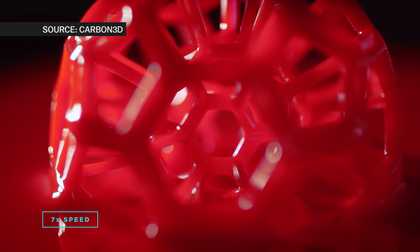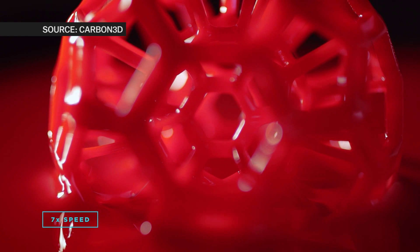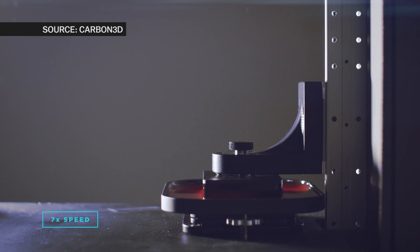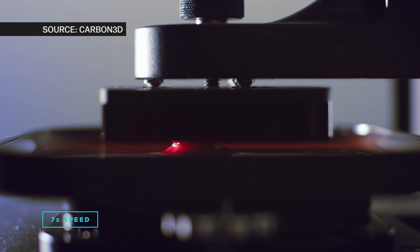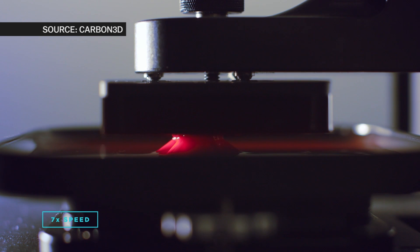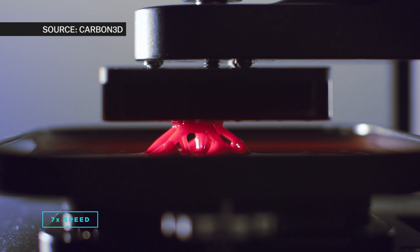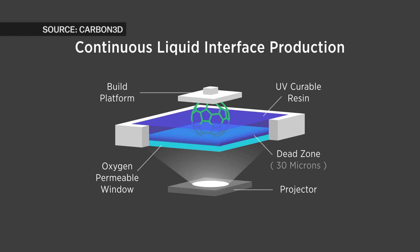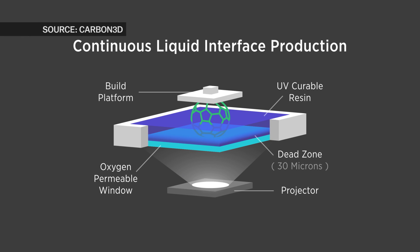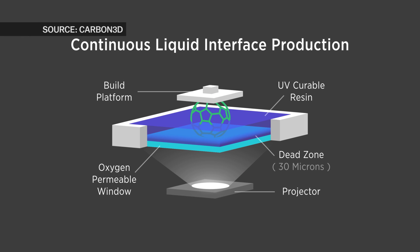And this 3D printing forms an object continuously out of a liquid resin. So what's happening here is you have a bath of liquid resin that solidifies when light hits it. So the platform dips into this resin and as it rises up you have a projector underneath the resin pool that's projecting a series of cross-sectional images that are in the exact shape of the object you want to make.